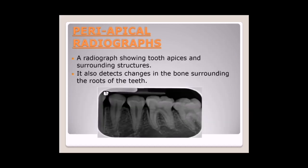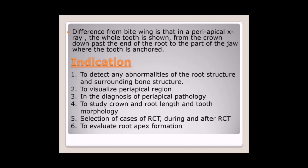Periapical radiograph: a radiograph showing both the apex and surrounding structures. It also detects changes in the bone surrounding the root of the teeth. The difference from bitewing is that in a periapical X-ray, the whole tooth is shown from the crown down to the end of the root to the part of the jaw where the tooth is anchored. Indications: number one, to detect any abnormalities of root and surrounding bone structures; number two, to visualize periapical regions in the diagnosis of periapical pathologies; number three, to study crown and root length and tooth morphology; number four, selection of cases for RCT — root canal therapy — during and after RCT; number five, to evaluate root apex formations.